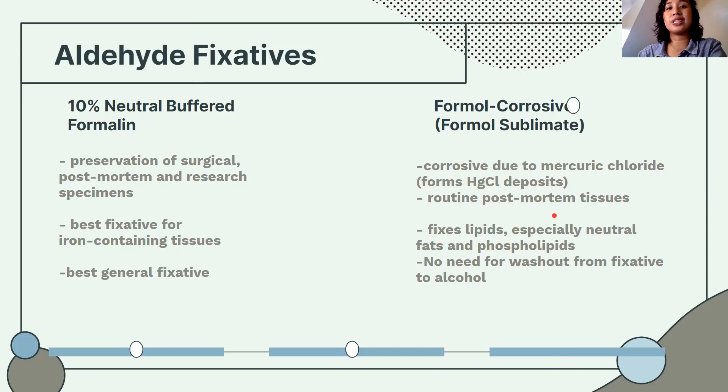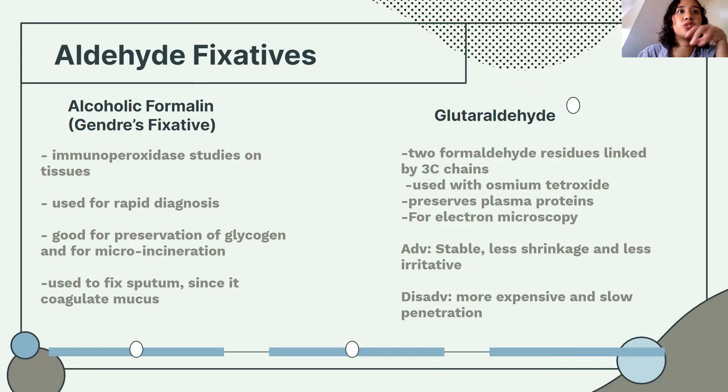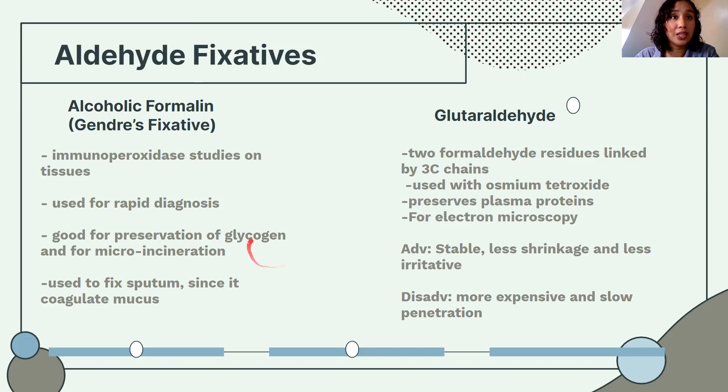Alcoholic formalin is formalin with added alcohol. It is used for immunoperoxidase studies, rapid diagnosis, and preserving glycogen — though there are better fixatives for glycogen. Its most unique feature is that it fixes sputum, since it coagulates mucus due to the addition of alcohol.